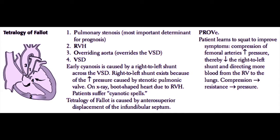Next, we'll discuss the tetralogy of Fallot, which is the most common cause of early cyanosis. The tetralogy is made up of four findings. Number one: pulmonary stenosis, which is the most important determinant for prognosis — the worse the stenosis, the worse the patient. Number two: right ventricular hypertrophy. Number three: overriding aorta, where the aorta overrides the ventricular septal defect so blood from both ventricles enters the aorta. Number four: ventricular septal defect. This makes the mnemonic PROVE for the tetralogy of Fallot.